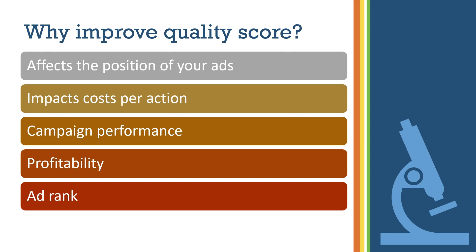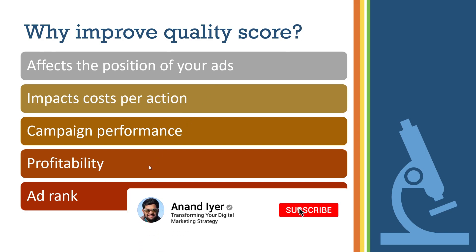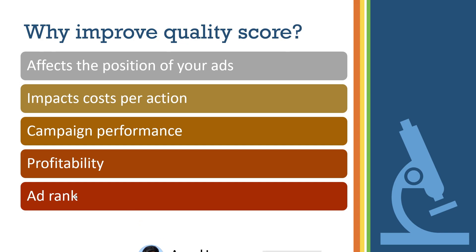It turns out that quality score has a direct impact on your ad position. It's going to impact your cost per action and overall your campaign performance is going to depend on your quality score. Not just that, it's also going to impact your campaign profitability because it's going to have a direct impact on your cost per action, so your profitability is going to be dependent on your score. And finally, your quality score is directly going to impact your ad rank as well. So there are many reasons why you need to focus on quality score — it goes across your profitability, your ad rank, your campaign performance, and your cost per action.